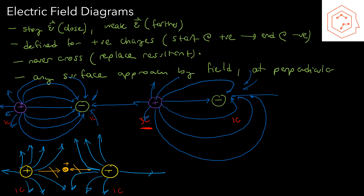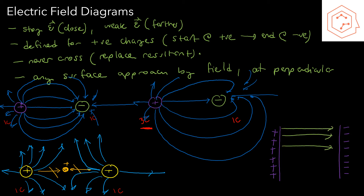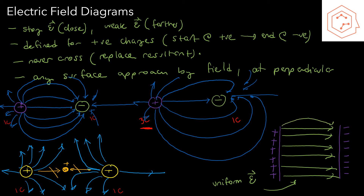One final scenario you should be aware of is the parallel plate situation. If we have a plate with a bunch of positive charges and another plate with a bunch of negative charges, the field lines from all these charges simply add up and create a uniform field between the plates. The electrical field inside these two plates is uniform and constant, which is very useful because the field does not change, giving you constant acceleration and constant force inside this region.